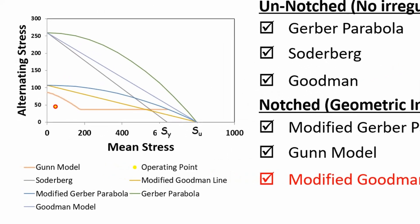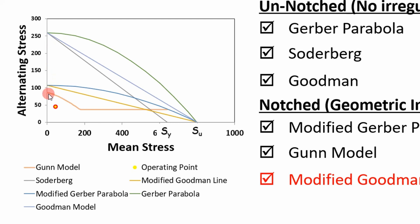To the left, you can see that we have our unnotched specimens. Our fatigue lines are a lot higher, and usually the fatigue models start at your endurance limit, and then they go to either intersect the yield strength or the ultimate strength, depending on what model you use. Your notched specimens, which take into account stress concentration factors, come down a lot lower because you're actually reducing your life by a stress concentration factor — either a fatigue stress concentration factor or a geometric stress concentration factor.